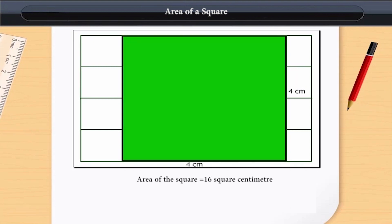Therefore, the area of the square will be 16 square cm. We can say that the area of a square is equal to the square of the length of its side.